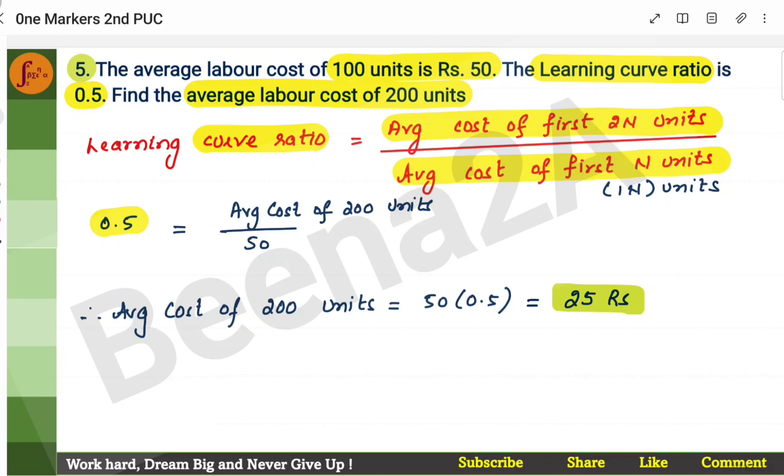First 1N units, that is 100 units, the labor cost is 50 rupees. So, 50 rupees for 100 units. You need to find the average cost for 200 units. The learning curve ratio is given. Substitute, you will get the answer, 25 rupees.